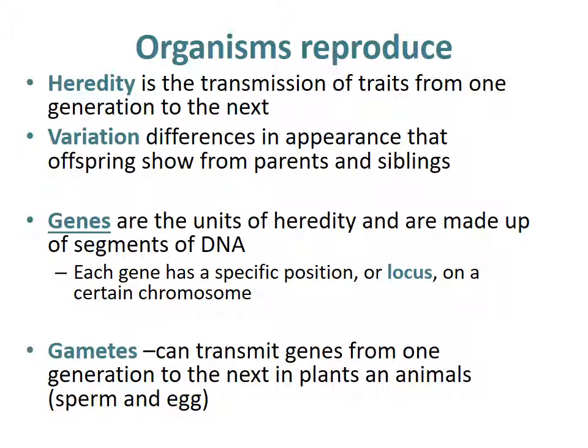If you remember in unit 1, we said that a characteristic of life is reproduction, so obviously living things have to be able to reproduce. Heredity is the transmission of traits from one generation to the next. All organisms, even of the same species, are not the same — there's variation in appearance that offspring will show from their parents and siblings. Genes are the basic unit of heredity, made up of segments of DNA, and each gene has a specific position or locus on a certain chromosome. Gametes can transmit genes from one generation to the next in plants and animals — we've got sperm and egg for that.